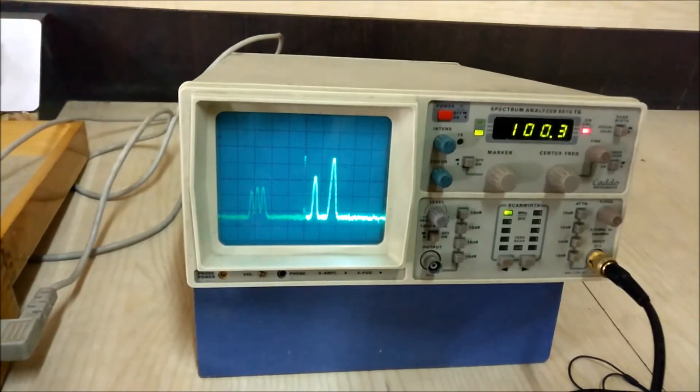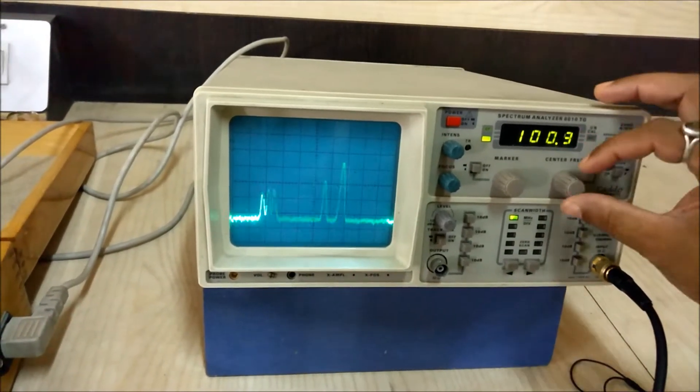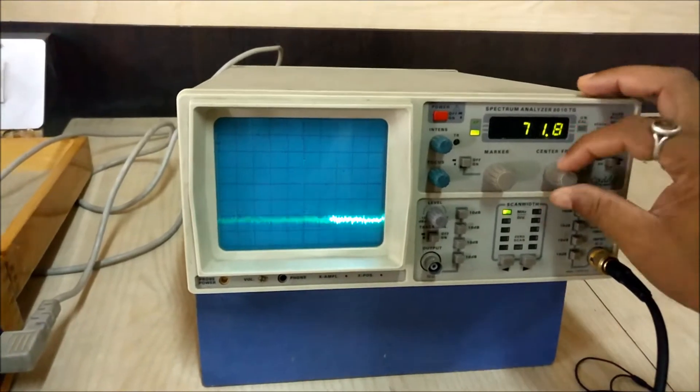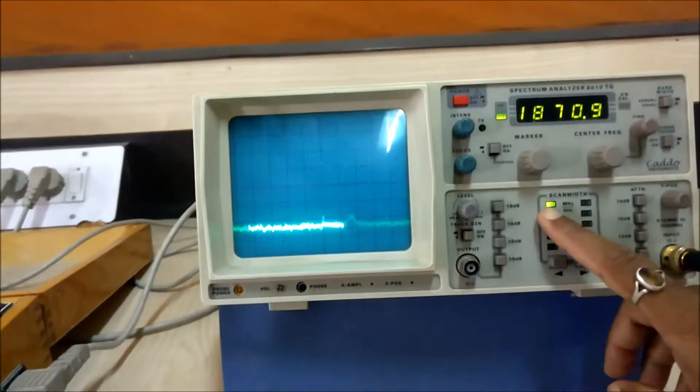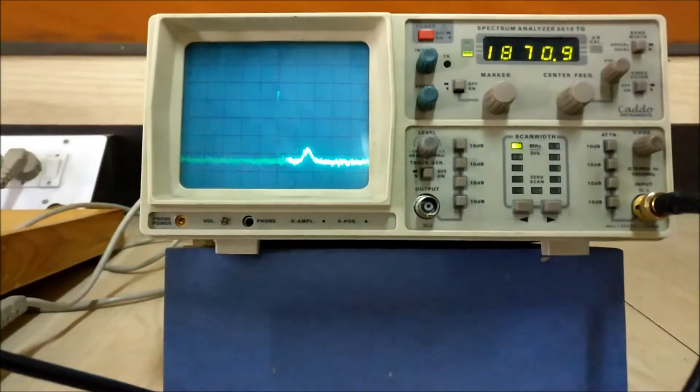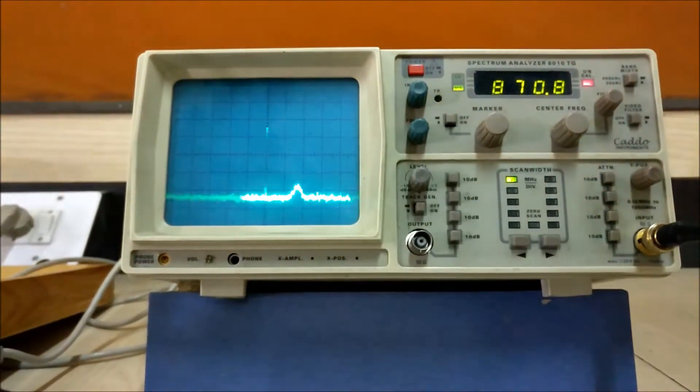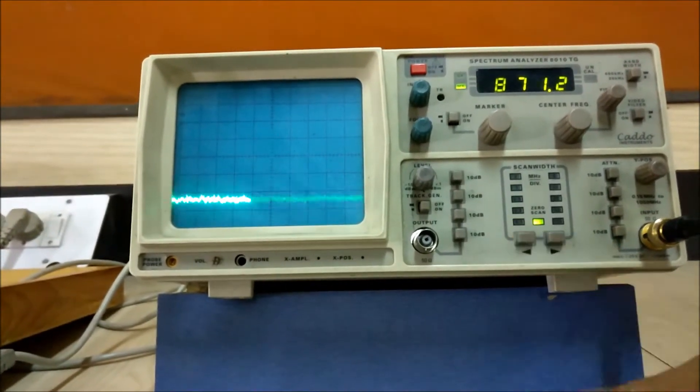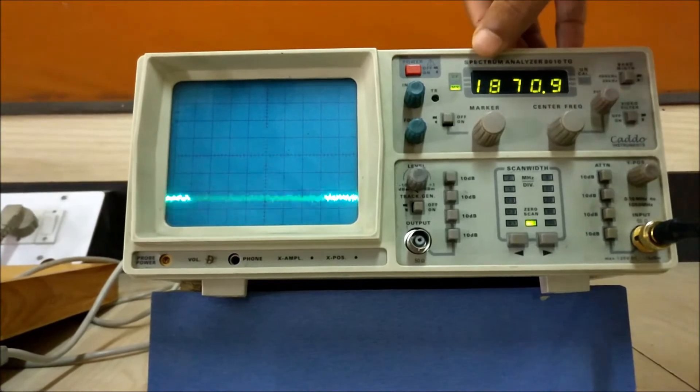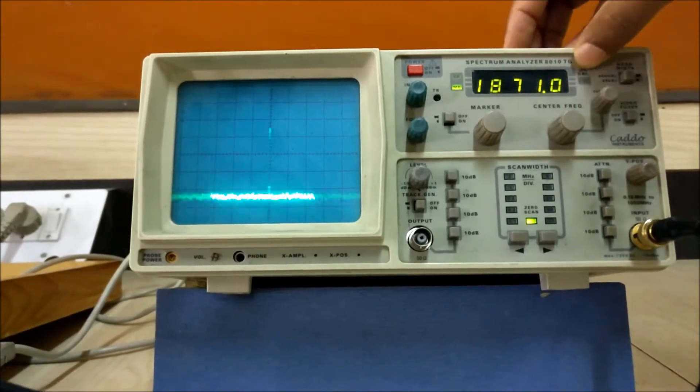So let us see how these signals are coming. Basically we have to set the center frequency. Suppose we have taken a random frequency, so we have to first check whether the signal scan width is zero or not. First of all we have to set it to zero scan.